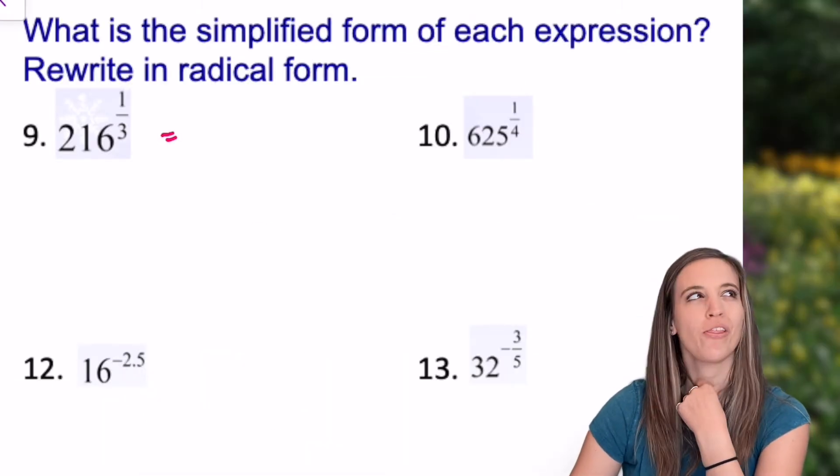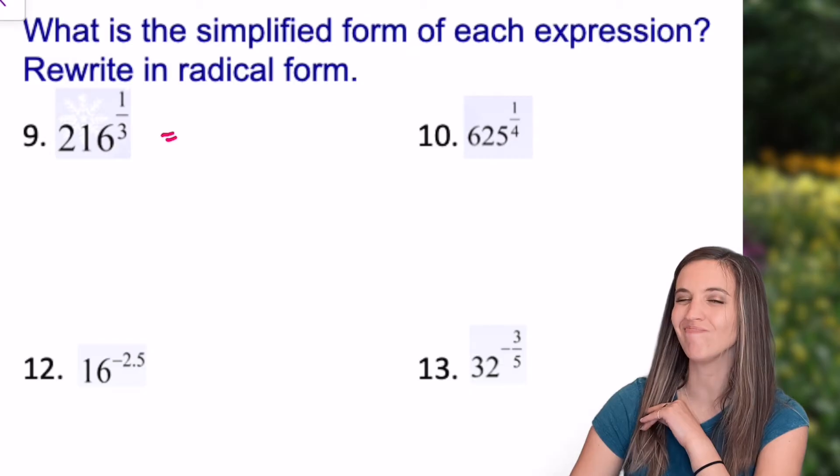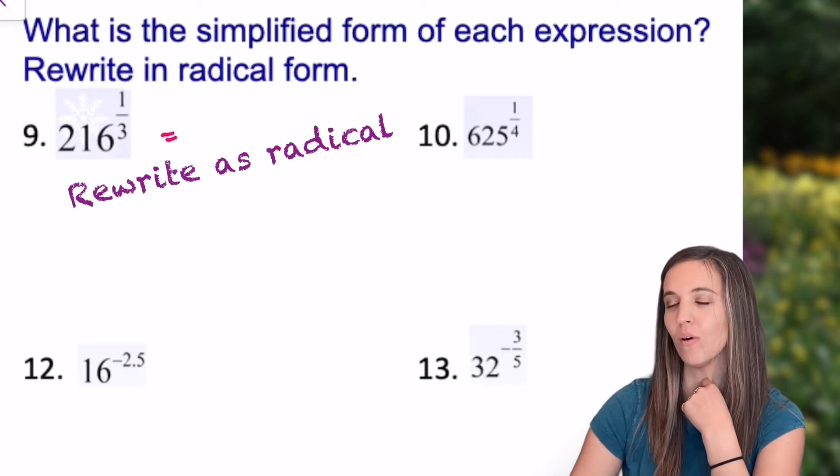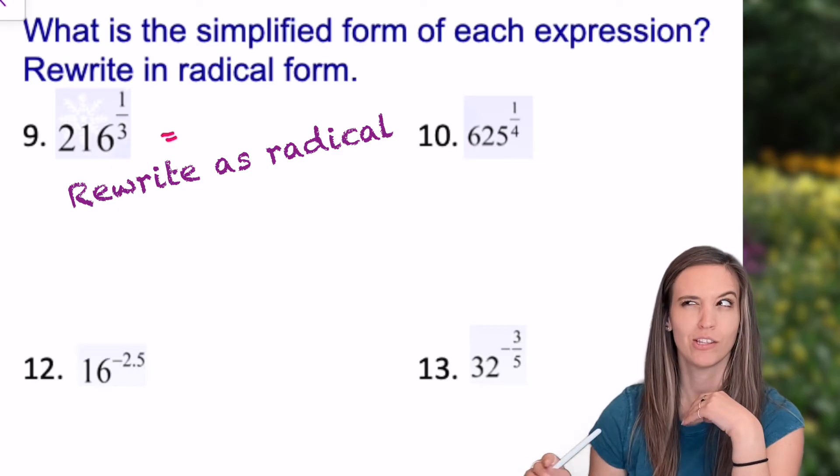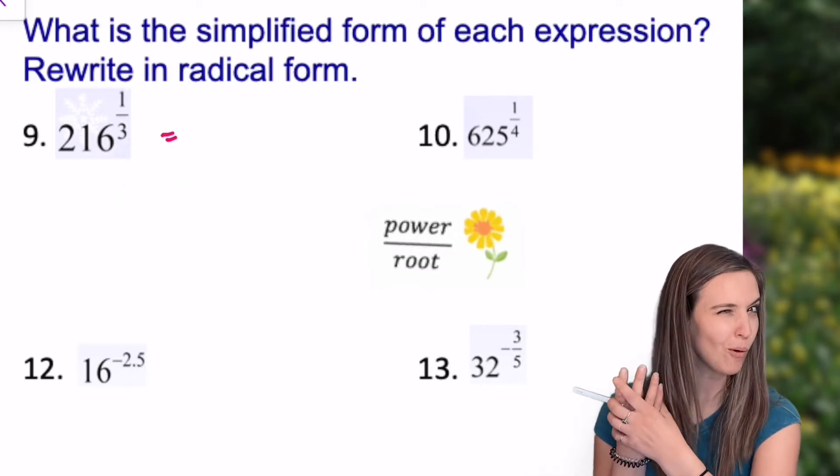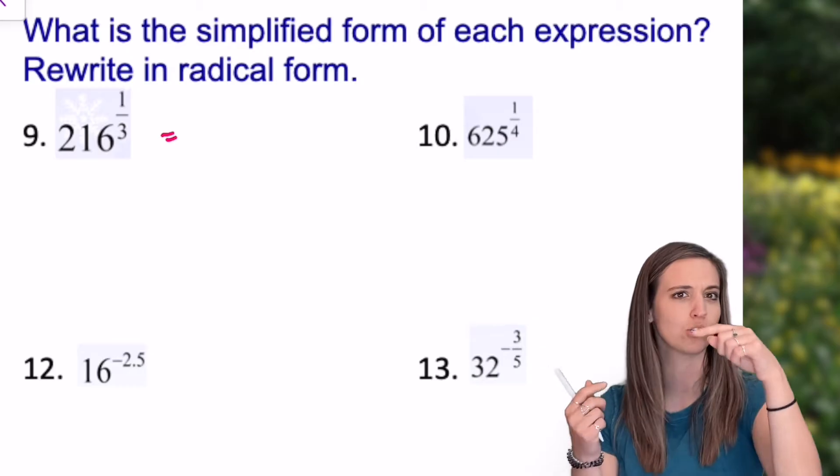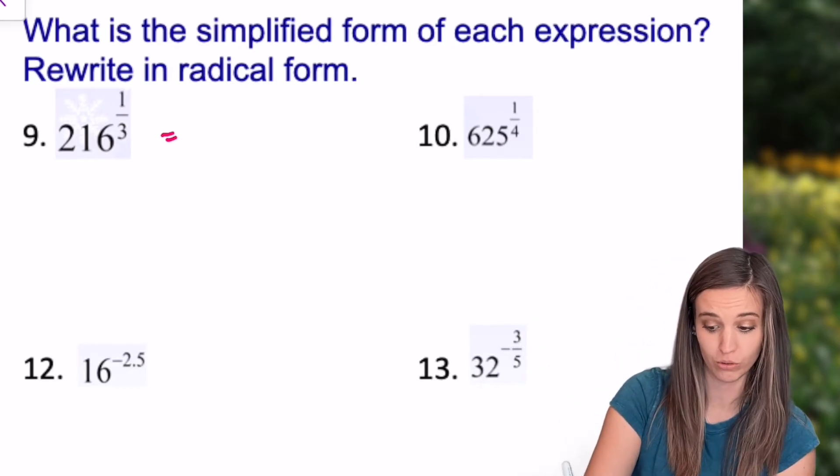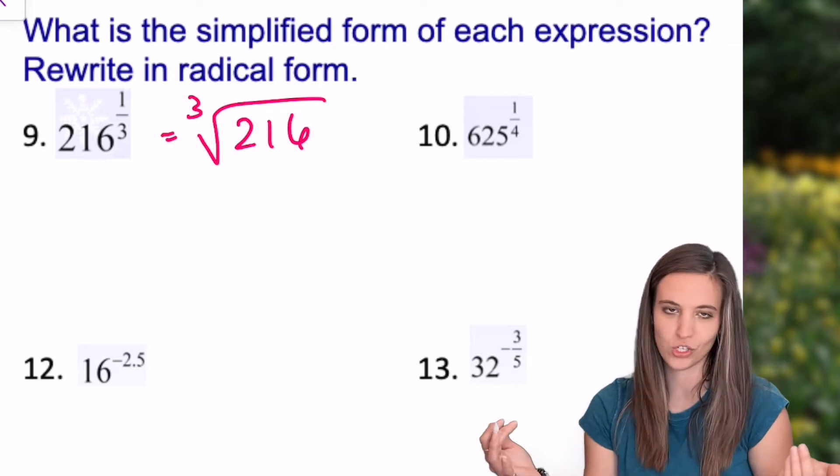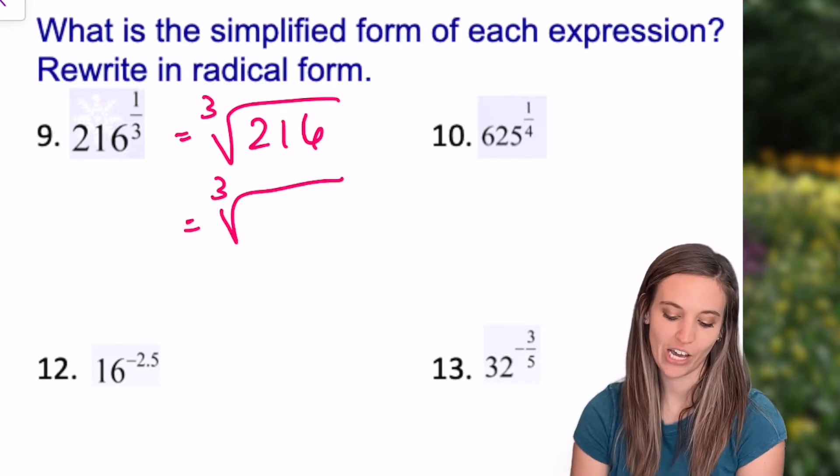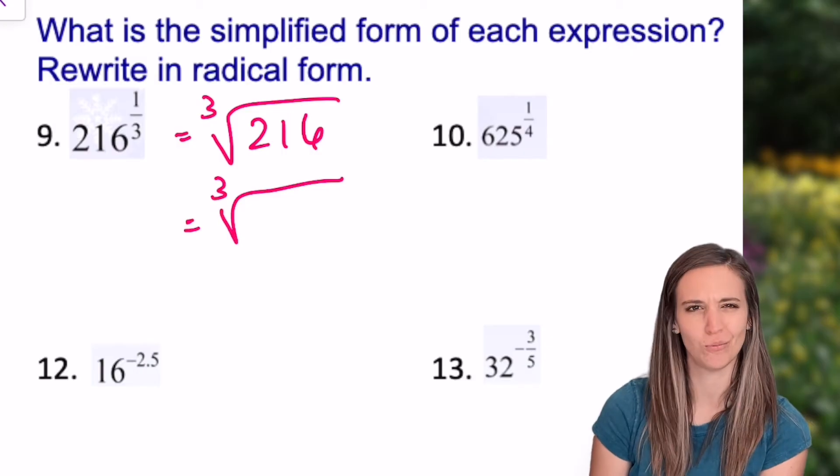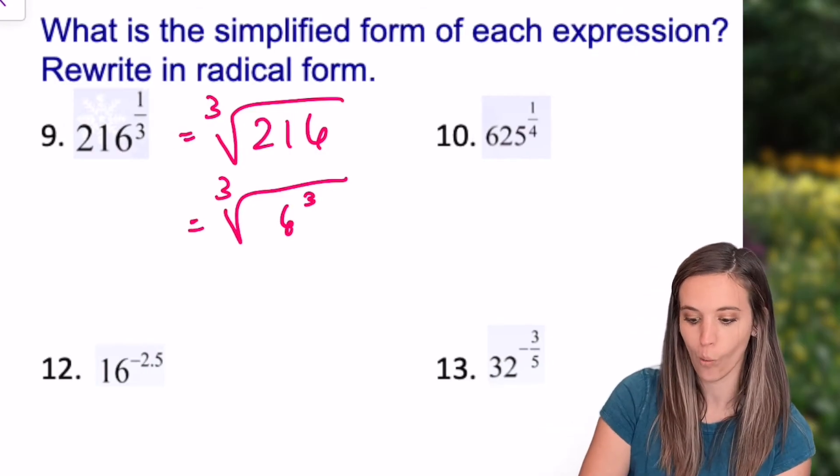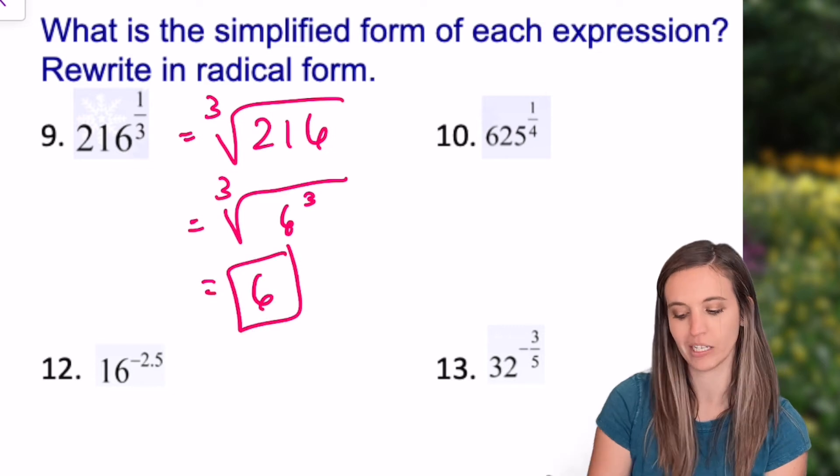Okay, 216 to the 1/3rd power. I want to simplify this. It's going to be easier if I rewrite this as a radical. Okay, well 1/3rd power. Well the roots power the flower. So it's root on bottom, power on top. So this is a cube root of 216 to the 1 power. So I'm just going to write the cube root of 216. Okay, well 216, that's just 6 cubed. We remember that from SOAP. So the cube root of 6 cubed would be 6. No problem.